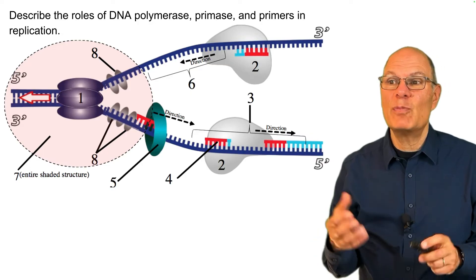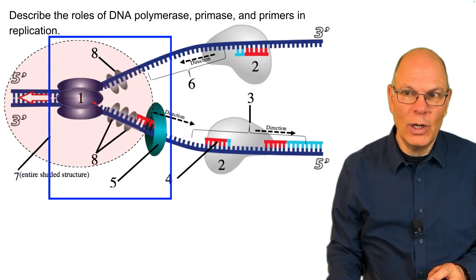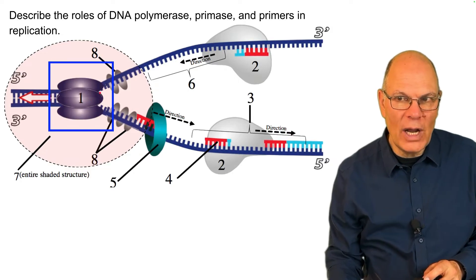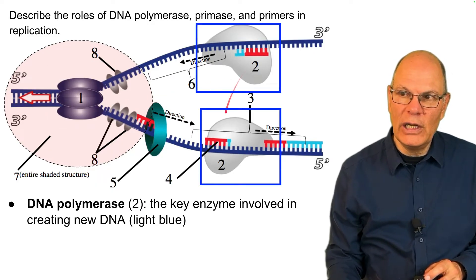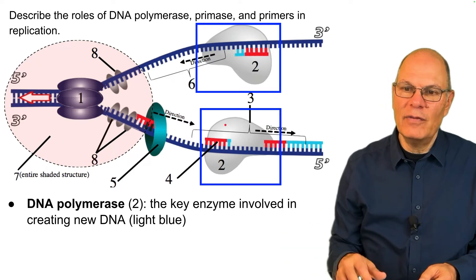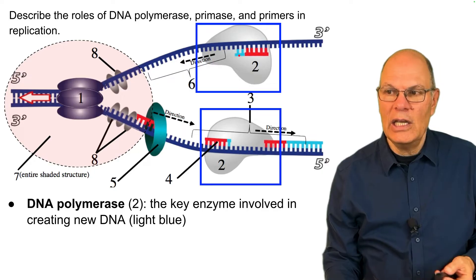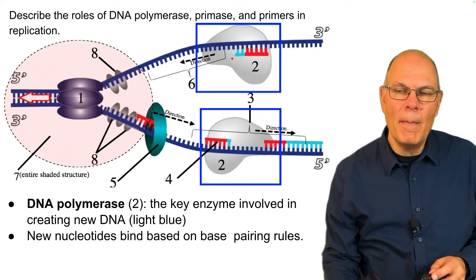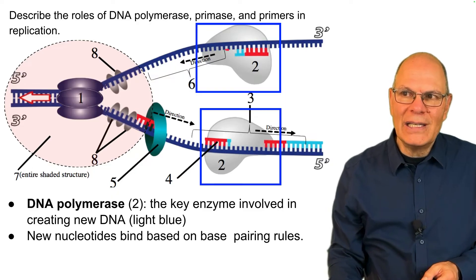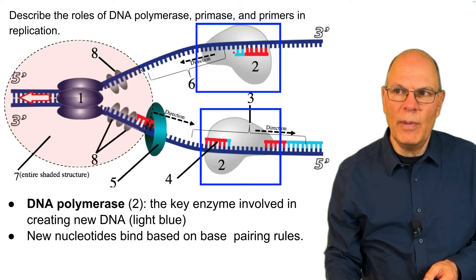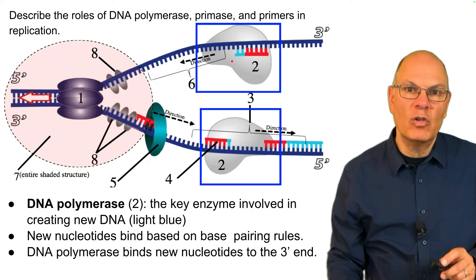Describe the roles of DNA polymerase, primase, and primers in replication. This is a replication fork, with DNA helicase opening up the parent strand and exposing the nucleotides in the two daughter strands. DNA polymerase is the key enzyme involved in creating new DNA. The parent DNA is shown in dark blue, and the new DNA coming in is represented in light blue. Nucleotides bind based on base pairing rules — DNA polymerase doesn't determine which nucleotide fits; that knowledge is in the template strand. If there's a C, then a G will bind; if there's an A, then a T will bind.